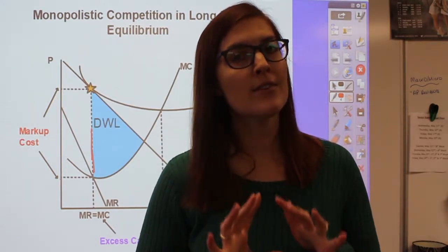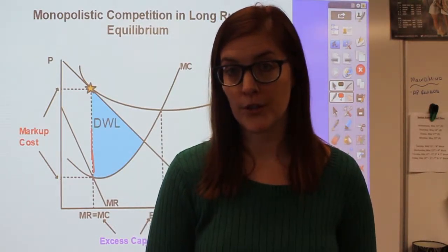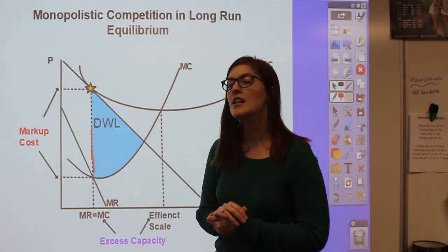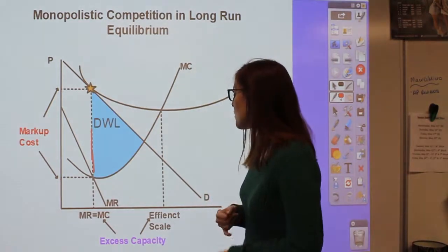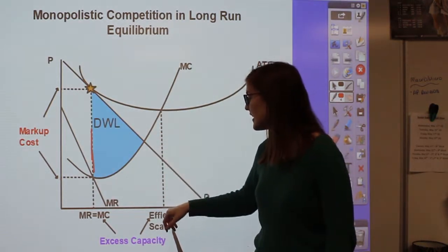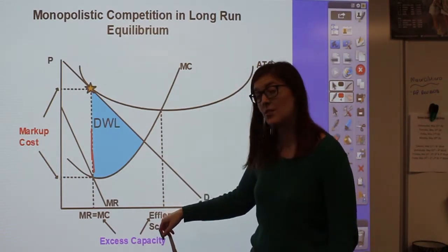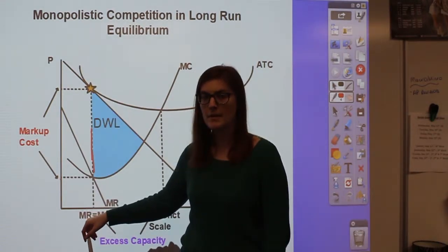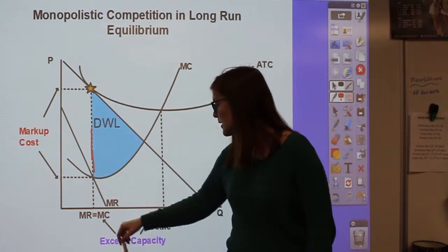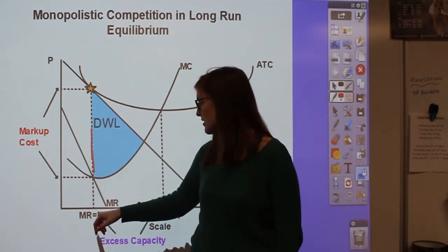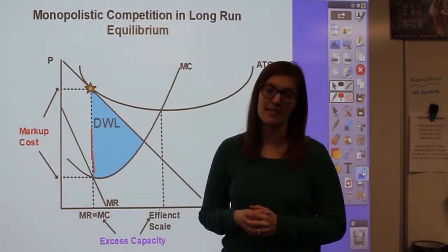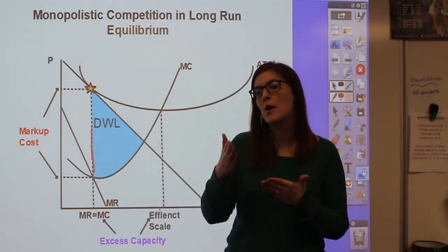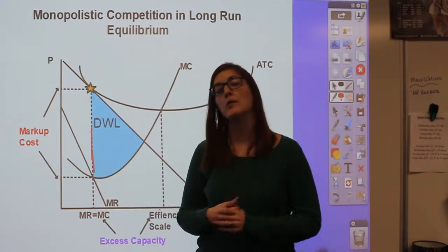This is going to be very similar to the monopoly graph we cover later. In perfect competition, the firm would sell a larger quantity — at the minimum of ATC, known as the efficient scale. But in monopolistic competition, they sell at a lower quantity. The difference between that perfectly competitive quantity and the monopolistically competitive quantity is known as excess capacity.